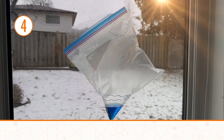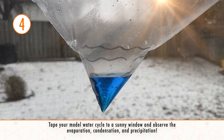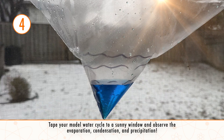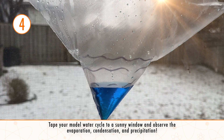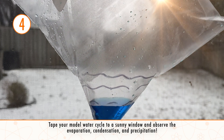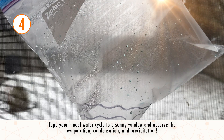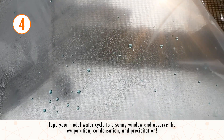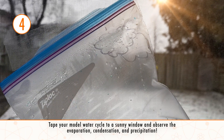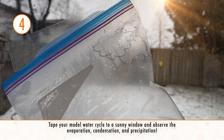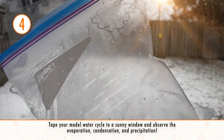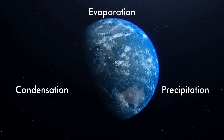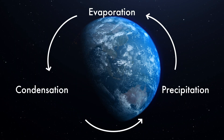Here's what's happening: the sunlight heats the water in the bag causing it to evaporate — turn into water vapor. This is just like how puddles dry up on a warm day. The water vapor rises and condenses on the sides of the bag when it cools, forming tiny water droplets just like the clouds in the sky. When enough droplets form they'll collect and fall back down as precipitation, just like rain. This mini water cycle is the same process happening on earth every single day.